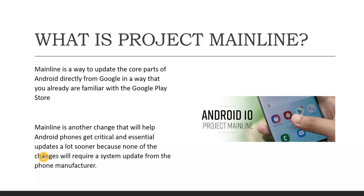Mainline is another change that will help Android phones get critical and essential updates a lot sooner, because none of the changes will require a system update from the phone manufacturer. Earlier, there used to be hundreds of different companies grabbing source code and building slightly different versions of Android. Keeping all devices up to date is a mountain of work, and phone manufacturers adding extra features makes updating even more complex.